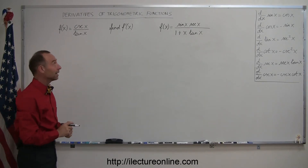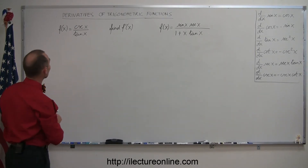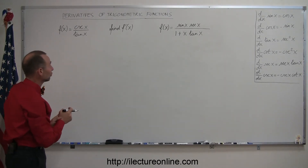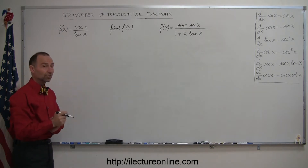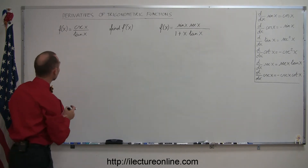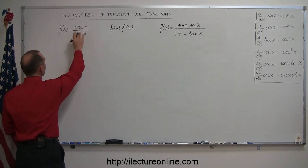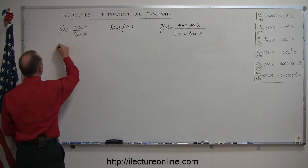Welcome to iLecture Online. Here are a couple more examples of how to take the derivatives of two trigonometric functions. Let's start with the first one. We have a quotient, so we're going to use the quotient rule here.